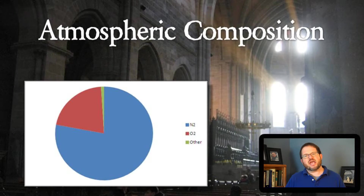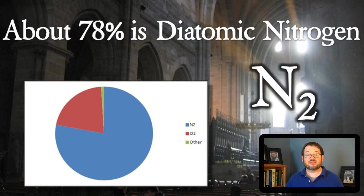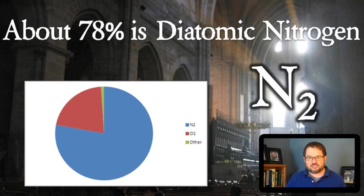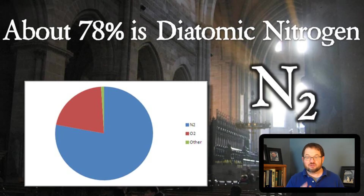If we look at a pie chart showing the main constituents of the Earth's atmosphere, we can see that by far the single largest constituent is diatomic nitrogen. Diatomic just means two atoms hooked together to make a molecule — N2, diatomic nitrogen. If you stick around for ATS-113, you'll learn all about diatomic nitrogen, but it has no role whatsoever in the carbon cycle, so we don't need to worry about it.